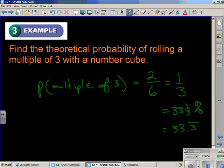Or thirty-three point three repeating chance, or, let's round it, thirty-three percent chance of rolling a multiple of three when rolling a number cube.